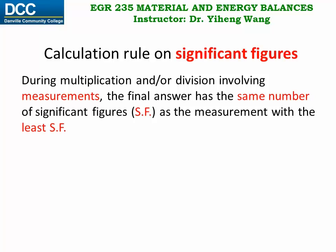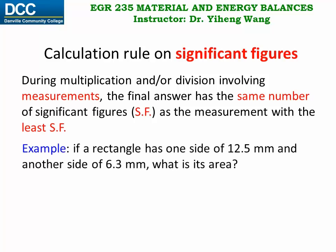I want to show a simple example first before providing more detailed explanation. For example, if a rectangle has one side of 12.5 mm and another side of 6.3 mm, and we assume both of these two numbers are measurements obtained through some measuring tools, what is the area of this rectangle? The calculation is very simple, area equals to the product of these two sides.